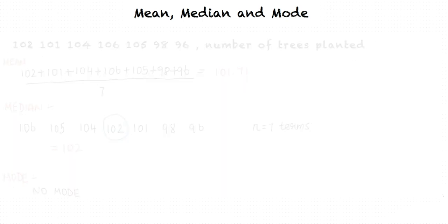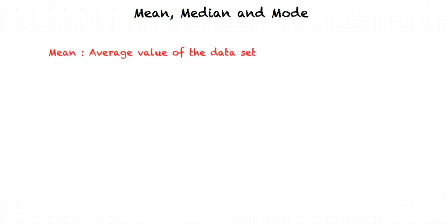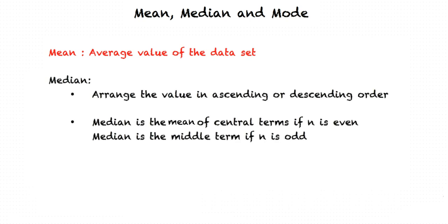The mean of a set of given data is the average value of the data. In order to calculate the median, we first sort the data in ascending or descending order. If the number of terms is even, the median is the mean of the two central terms; if odd, the median is the middle value. Finally, mode is the most repeated term in the data, identified by examining the data.